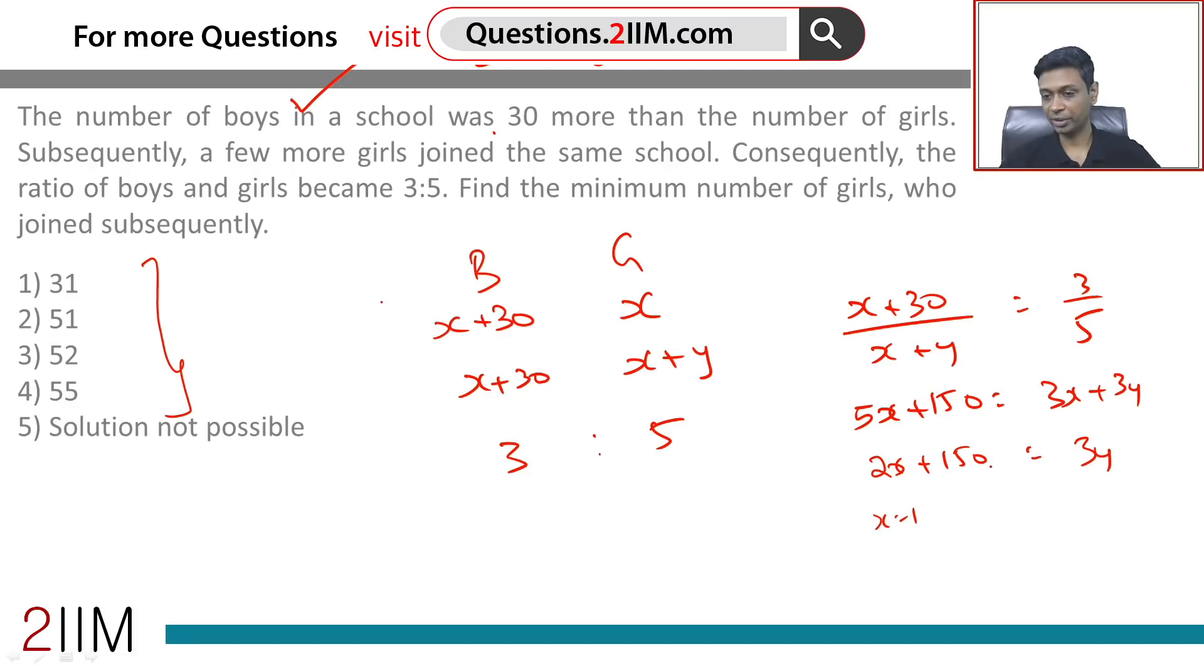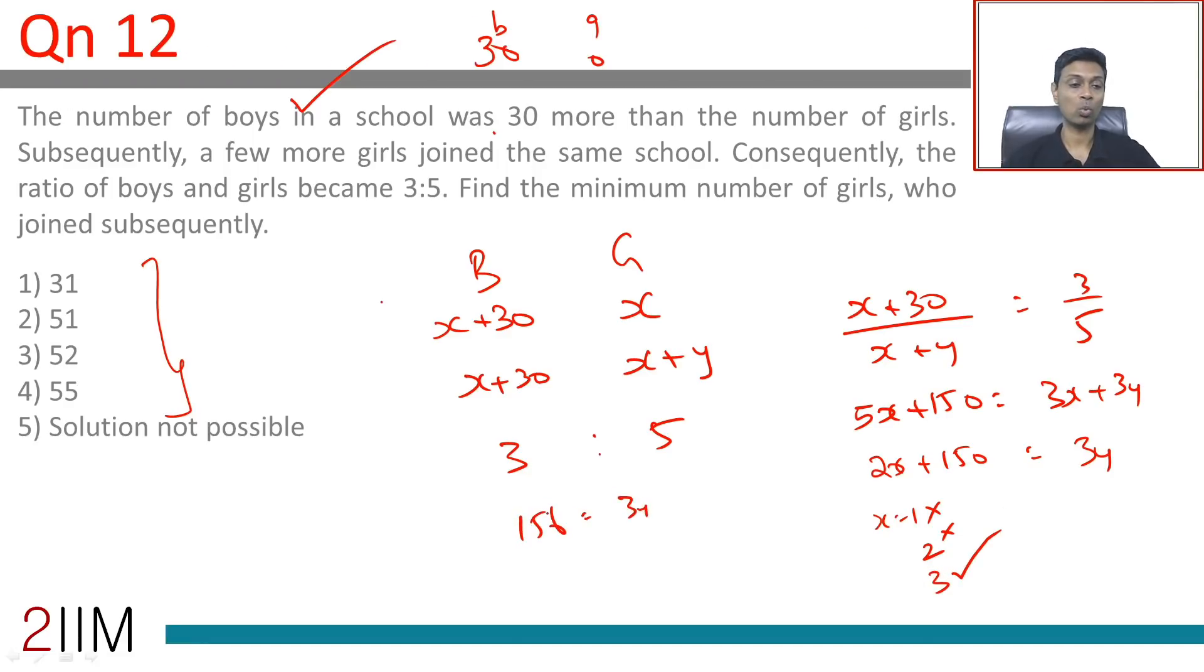If x equals 1, 152 is not a multiple of 3, so this doesn't work. x equals 2 gives 154, not a multiple of 3. x equals 3 works. 156 equals 3y, so y equals 52.